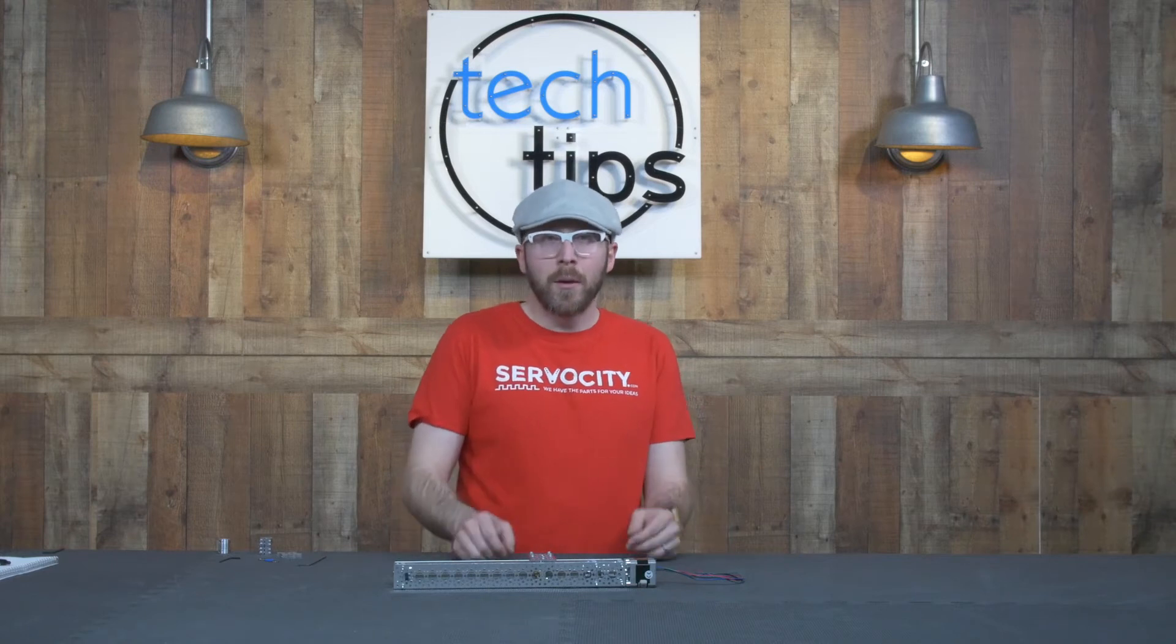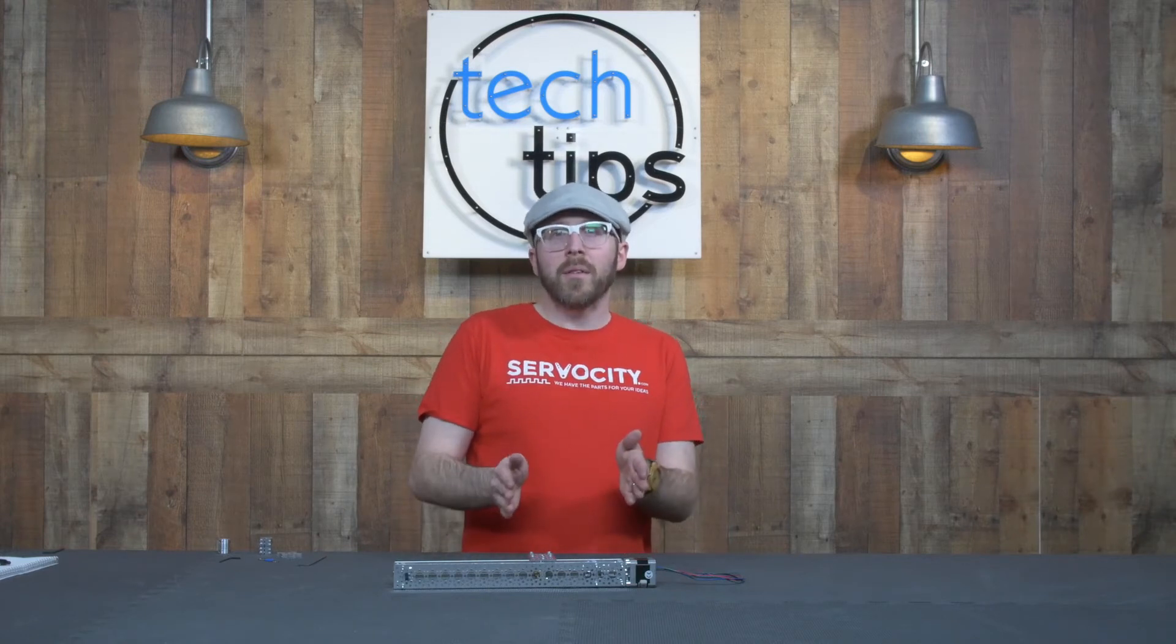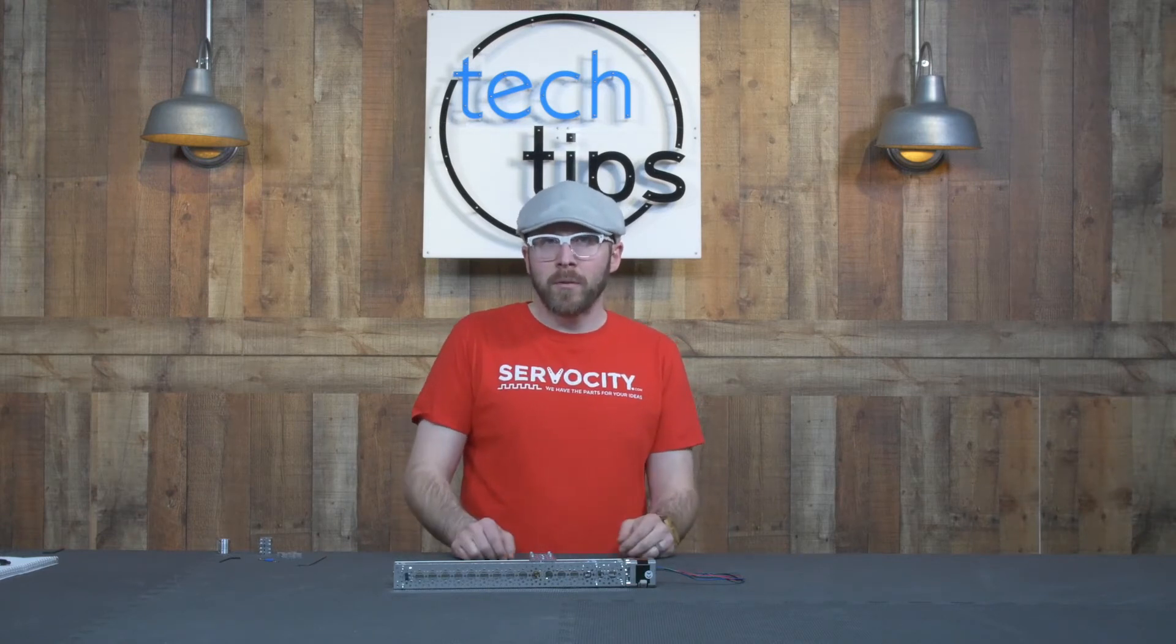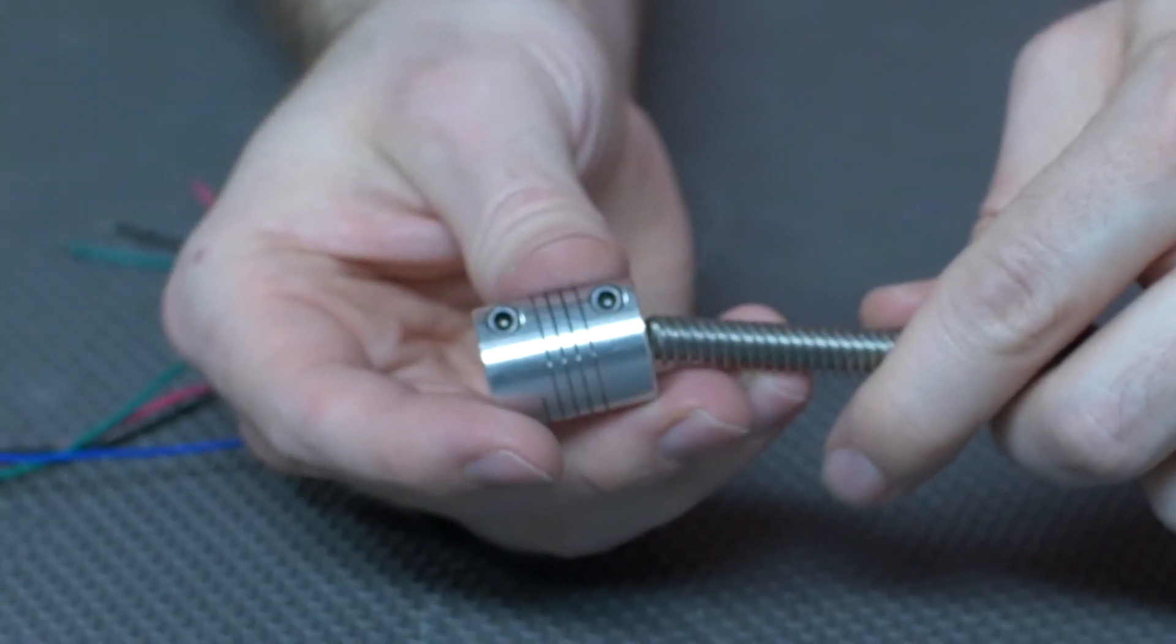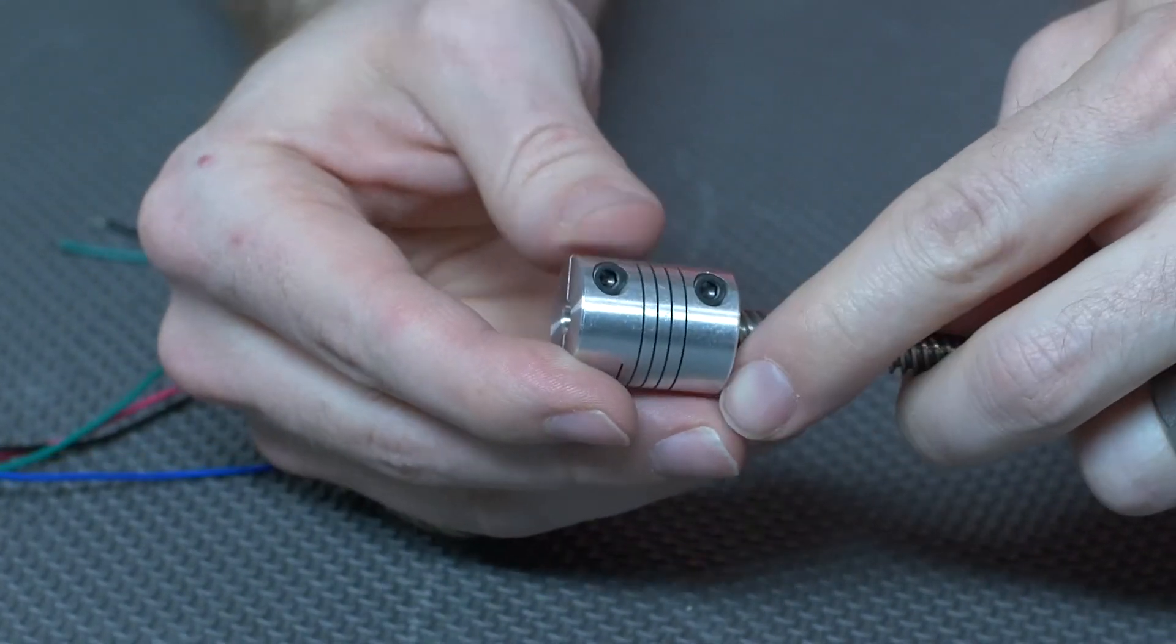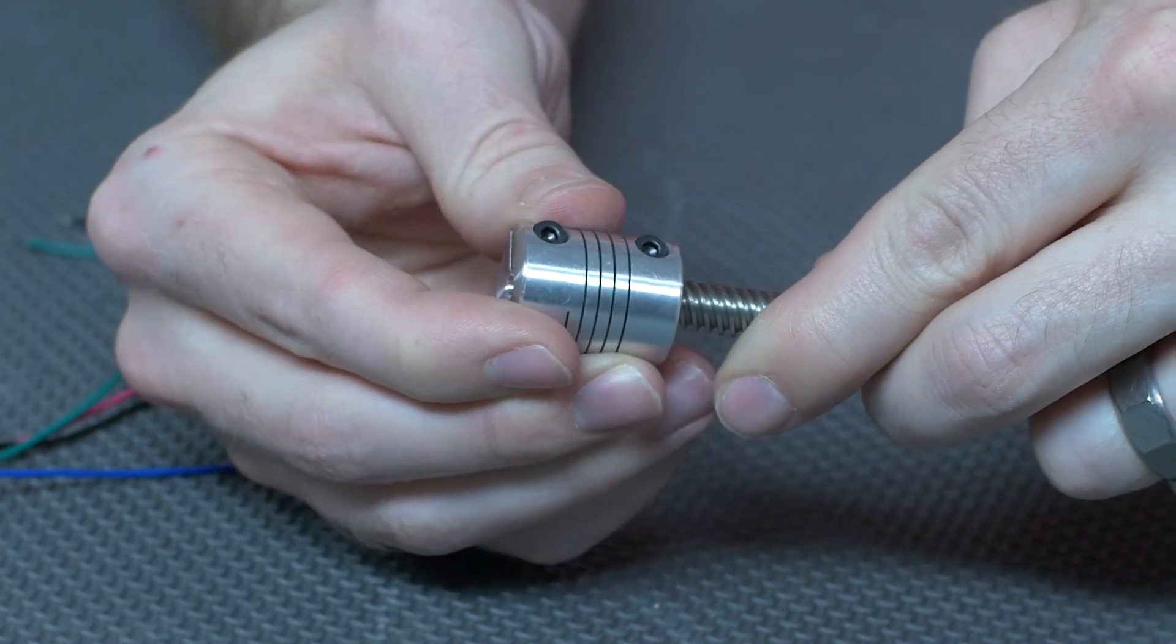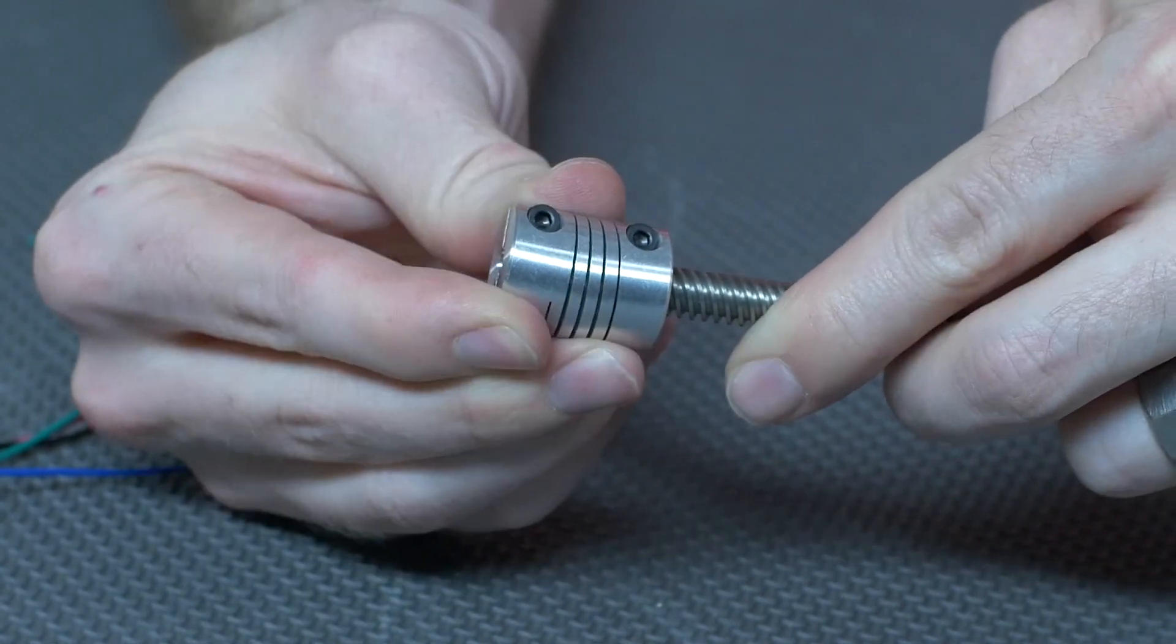When inserting shafts into the flex coupler, only insert the shaft up into the point where the spiral begins, because if you keep that spiral portion in the middle of the flex coupler void, that will increase the amount of flexibility that you get.